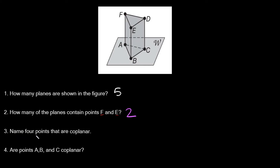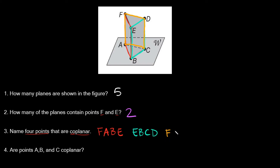Number three asks: name four points that are coplanar — four points on the same plane. You have three options here. You can go with F, A, B, E on one side; or E, B, C, D on another side; or F, A, C, D on the back plane. Any of these sets of four coplanar points would work as a correct answer.